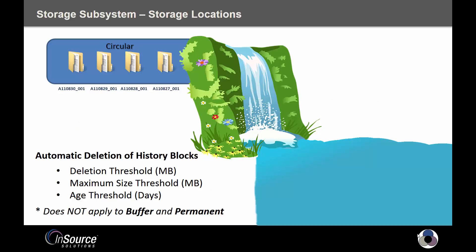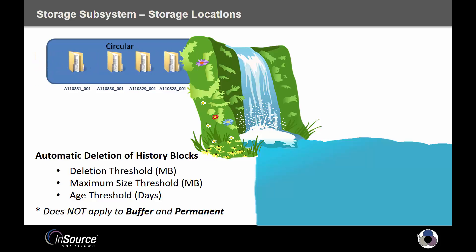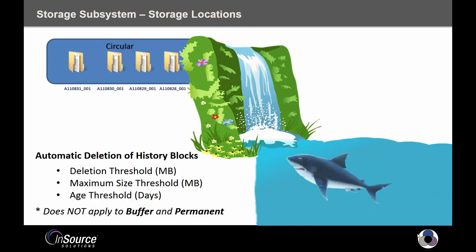Here's an example: I have four history blocks in my circular directory and hypothetically I have an age threshold that says after four days, delete the oldest history block. So a new history block is created for August 31st 2011, which forces the oldest history block to be sent into oblivion — represented by the shark in the picture. That history block is gone. Unless you have a backup, it's gone.